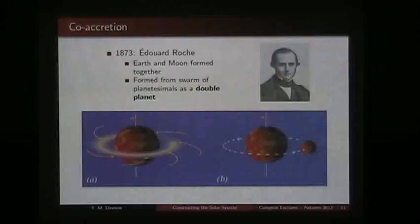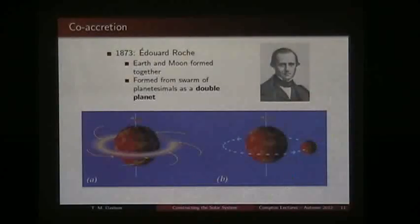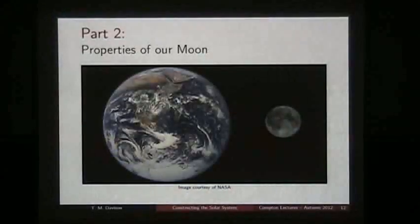The final classical mechanism is what we call co-accretion — the idea that at the same time the Earth was accreting from planetesimals colliding and sticking together, the moon also formed at the same time from a disk of material around the young Earth, in a similar accretionary process of gas, dust, and planetesimals sticking together in low-velocity collisions.